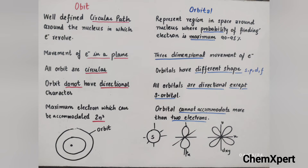Orbital is a three-dimensional structure — px, py, pz, dxy, dyz, dz², dx²-y² are all three-dimensional in nature. All orbits are circular whereas orbitals have different shapes like s, p, d, f. Orbits do not have directional character, but all orbitals are directional except the s orbital. Each orbit can accommodate a maximum of 2n² electrons — derived from electronic configuration 2, 8, 18, 32 — whereas an orbital accommodates only two electrons. I hope you are able to understand this short concept video on orbit and orbital.